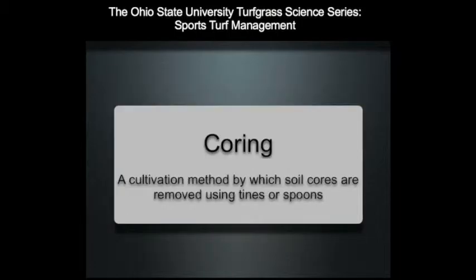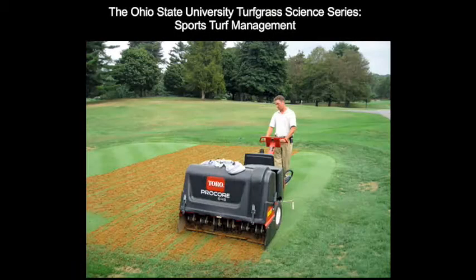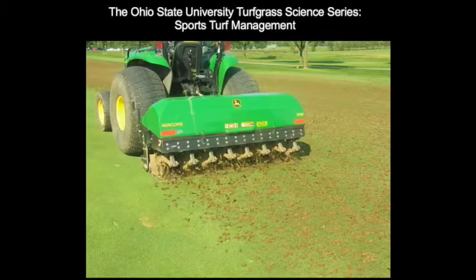Coring is a mechanical means of relieving compaction by providing holes or channels to improve air movement into the soil. Coring relieves compaction, improves gas exchange, and helps reduce thatch.